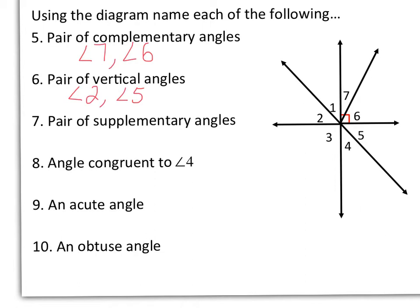7, a pair of supplementary angles. So here you might need to combine more than one pair of angles. So I said that if I take angle 4 plus angle 5 and angle 3, I'll get 180 degrees, so we can say that they are supplementary. Number 8, an angle congruent to angle 4. That would be angle 1, it's vertical angle.